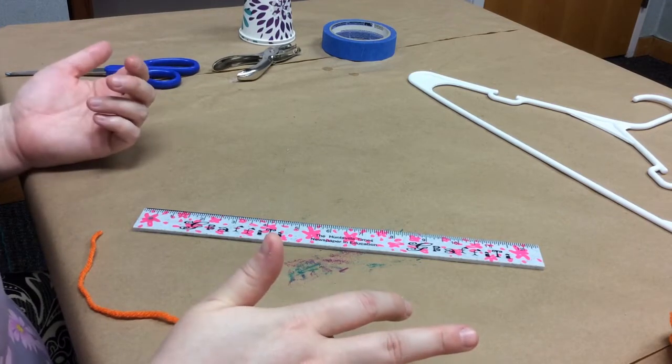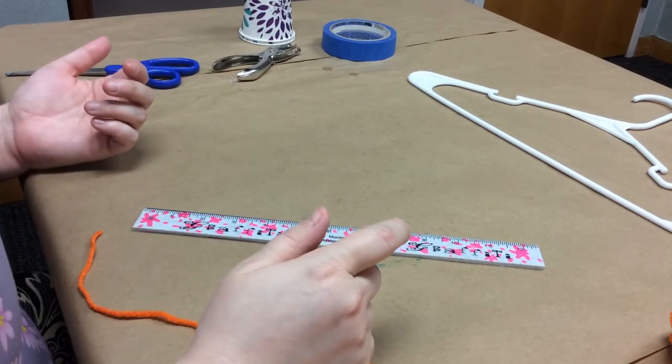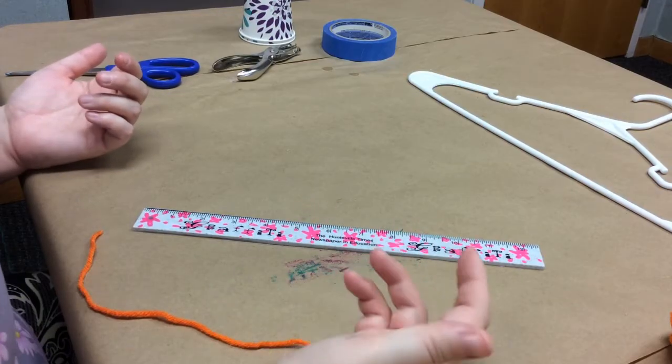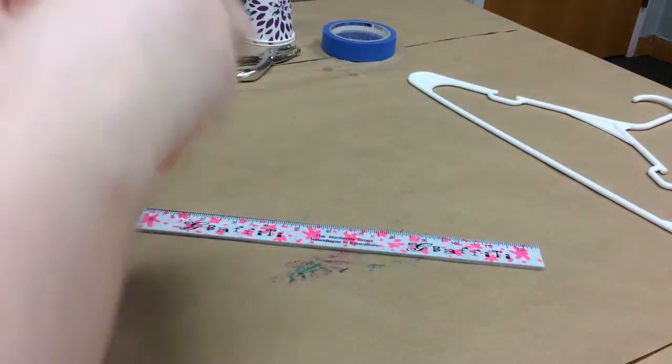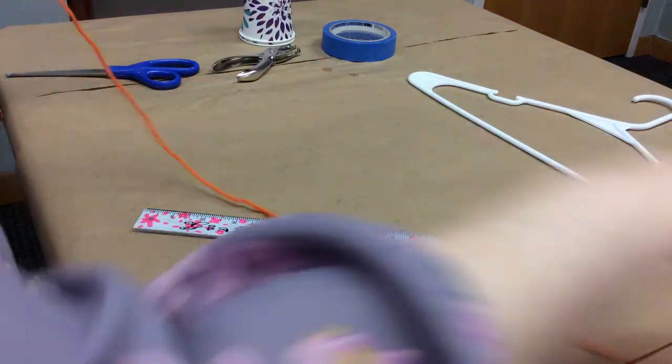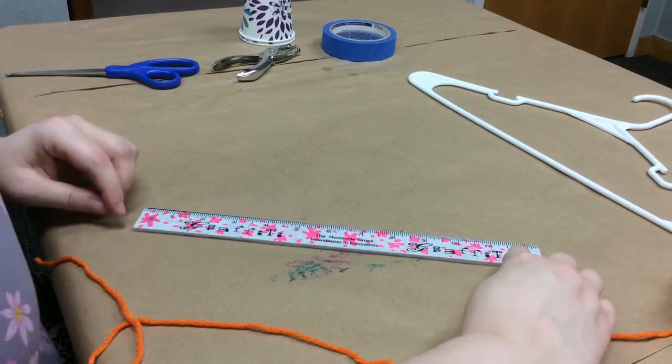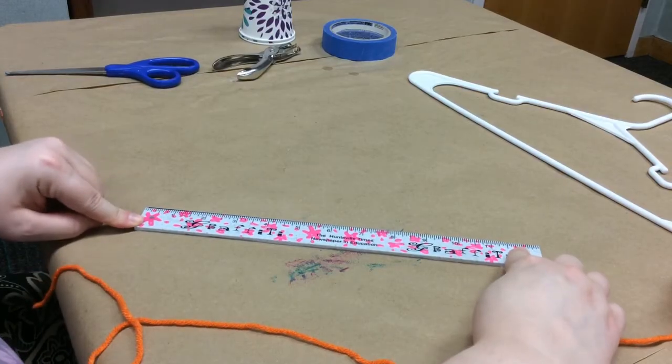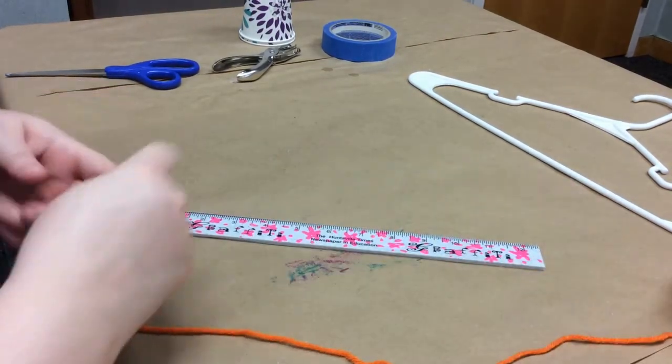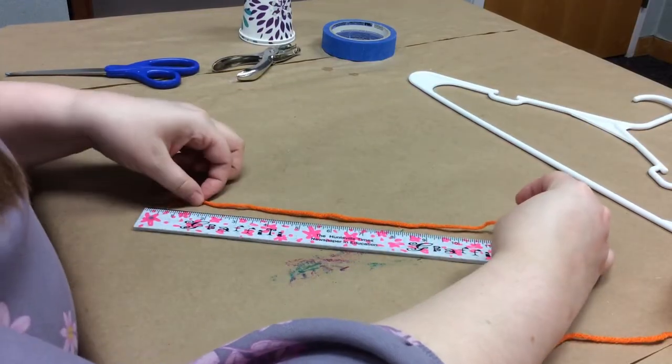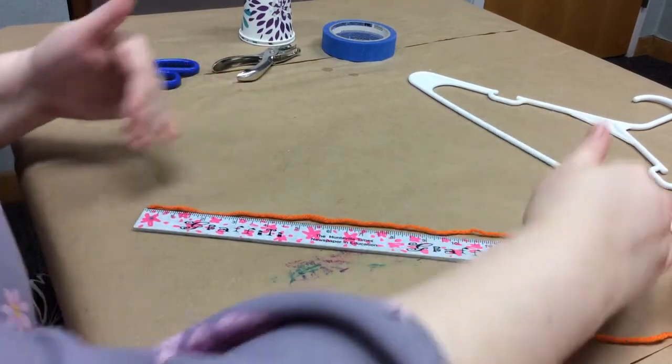My ruler for whatever weird reason is 12 and a half inches. I don't know why, that's just how it is. It's an odd choice, but there we go. So I'm going to keep that in mind. When you guys see me measure, I'm actually only going to measure to this point on the ruler rather than all the way to the end because my ruler is 12 and a half. So I'm going to lay my yarn out. I'm not going to stretch it.